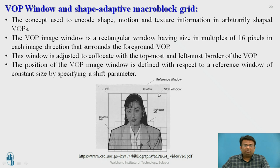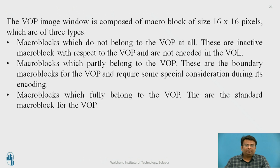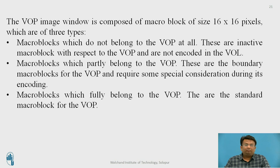The VOP image window is composed of 16×16 pixel macroblocks. Macroblocks that do not belong to the VOP at all are inactive and not encoded in the VOL. Macroblocks that partially belong to the VOP are boundary macroblocks and require special consideration during encoding. Macroblocks that fully belong to the VOP are standard macroblocks.